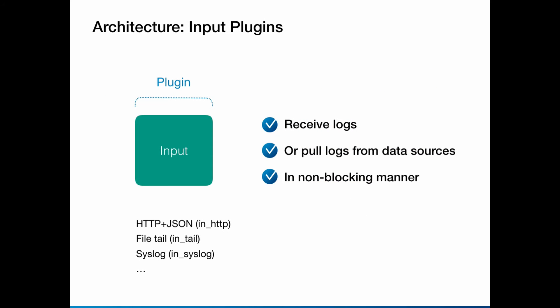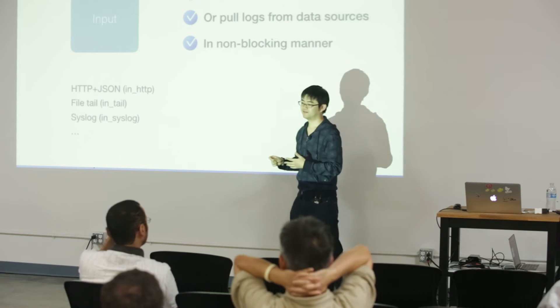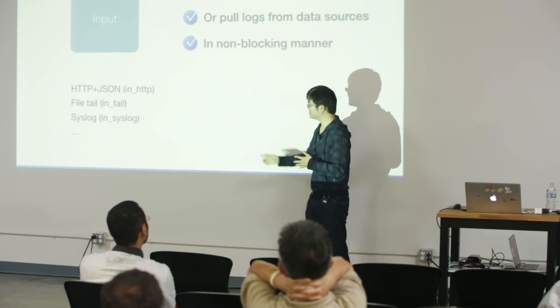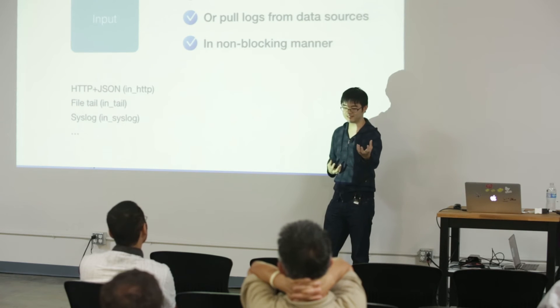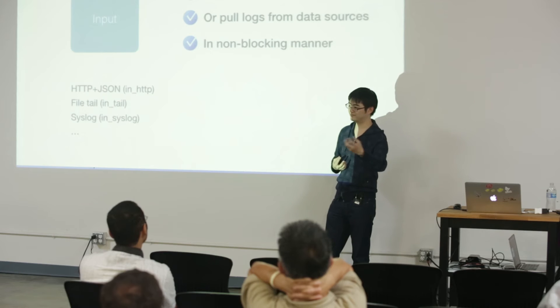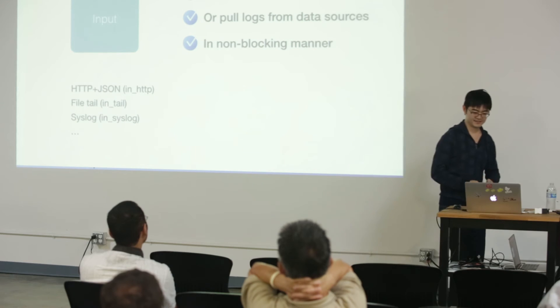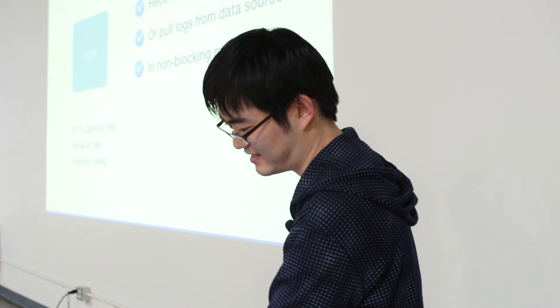The input plugin receives or proactively pulls data. One example is in-HTTP, which listens on a port so that applications can send data through a REST API. Another input plugin is in-tail, which reads data from a growing file. Another is syslog — you can send data using the syslog protocol over UDP or TCP and Fluentd receives it. There are many other input plugins as well.